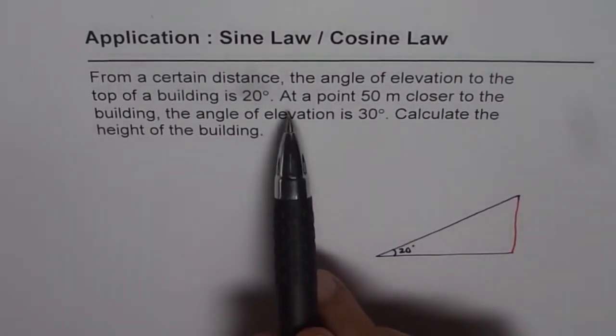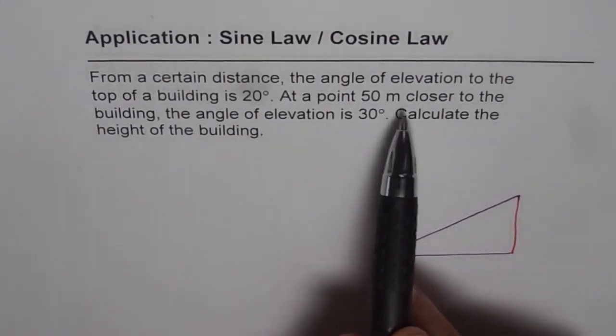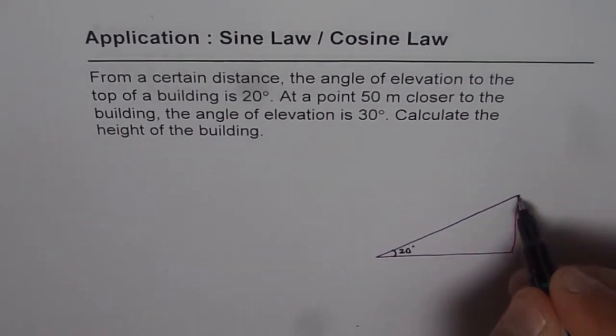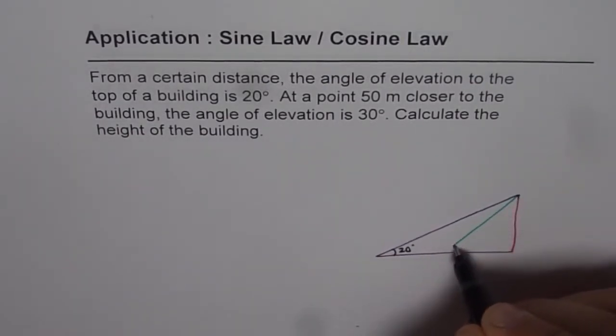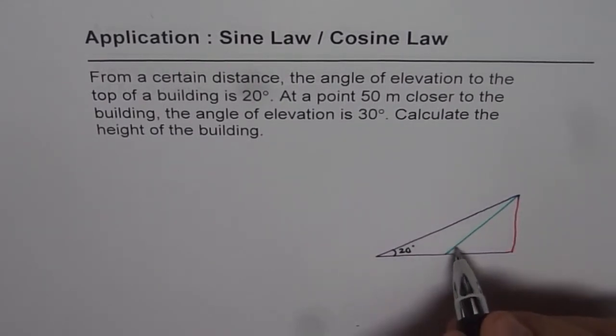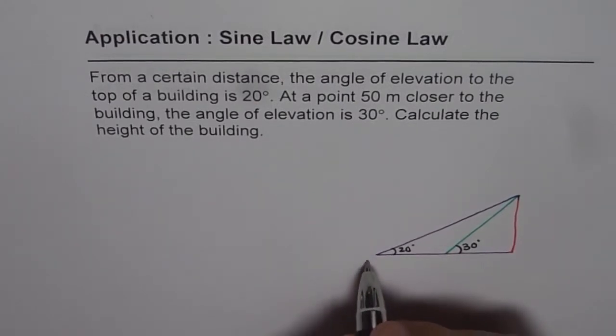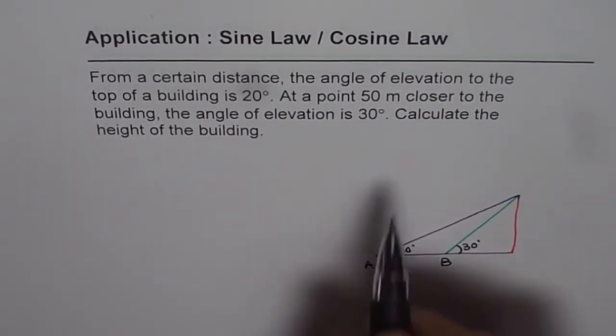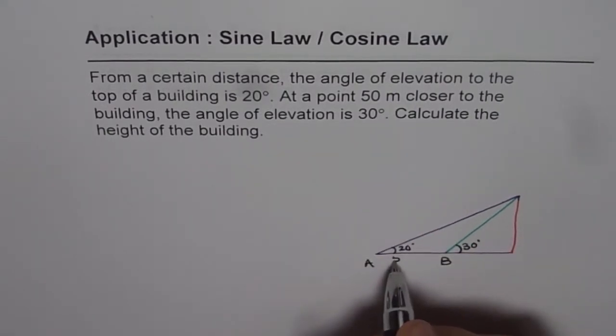Now the second part is, at a point 50 meters closer to the building, the angle of elevation is 30 degrees. So that means, let us join the top with another point. And this angle is given to us as 30 degrees. And let us say the point is A and B. Distance between A and B is how much? 50 meters. 50 meters closer, right?